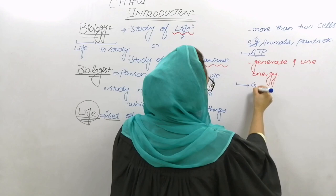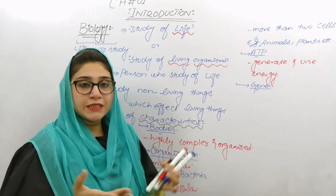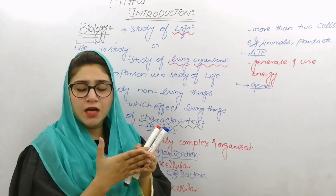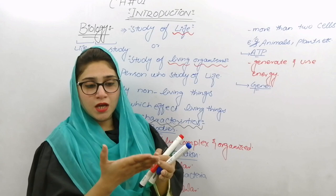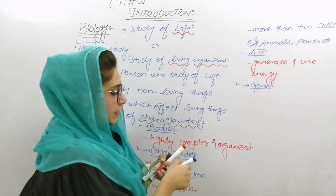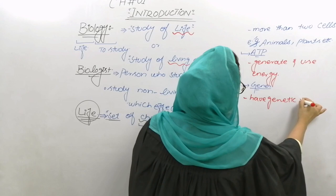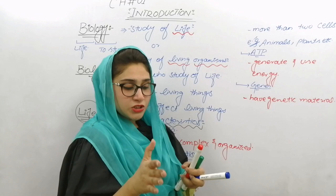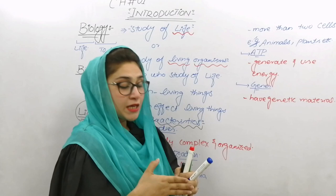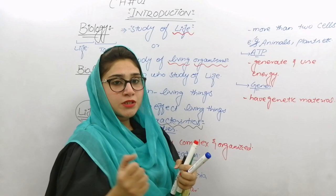Next चीज़ जो हम discuss करेंगे — That is Genes. Genes, जैसे के हम सब जानते हैं, is a basic unit of inheritance — वراثت की بنیادی اکائی۔ एक नसल से दूसरी नसल तक जो खसूसियात का तبादला होता है वो genes की वजह से होता है। जितने भी Living Organisms होते हैं they have genetic material — अपनी خصوصیات के لیے ایک جینیاتی مادہ موجود ہوتا ہے جو एक نسل سے دوسری نسل تک خصوصیات کا تبادلہ کرتا ہے۔